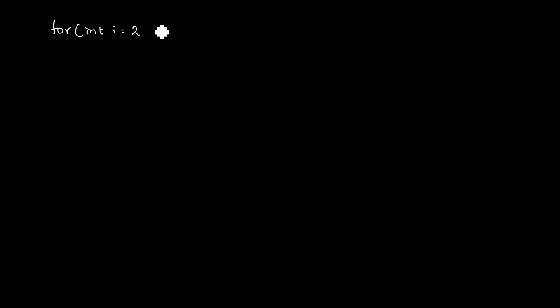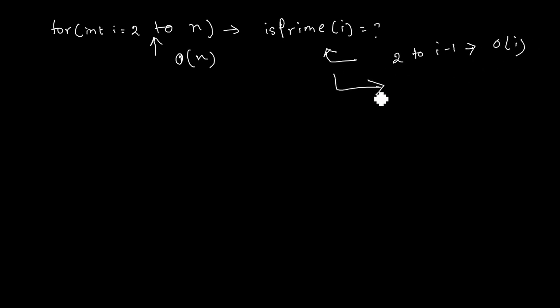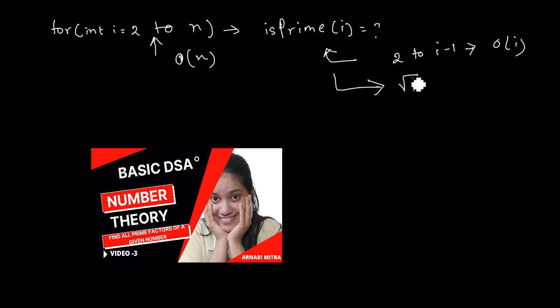In the brute force approach, we know 0 and 1 are not prime, so from i equals 2 to n we check for each and every number whether it is prime or not. This will obviously take O(n) iterations, and for each number checking from 2 to i-1 for any factor takes O(i) time. The improved way, which I covered in my previous video, can do this check within O(√i) time.